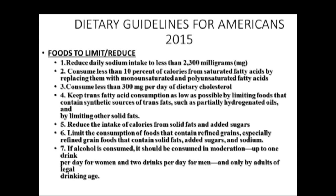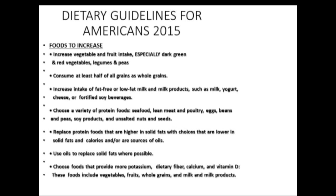The main message of the 2015 Dietary Guidelines was to consume a variety of vegetables including dark green and dark red vegetables and legumes; look at a variety of proteins including not just red meat but fish, poultry, legumes, soy products, nuts, and eggs; choose lower-fat dairy products and fortified soy beverages and cereals; and increase dietary fiber, calcium, potassium, and vitamin D.